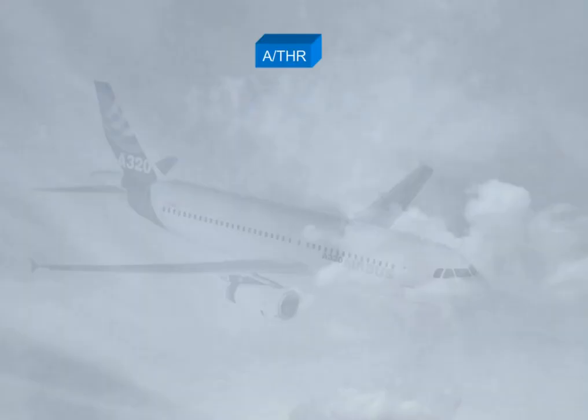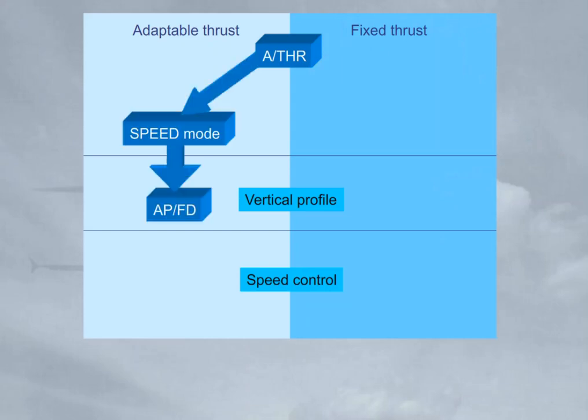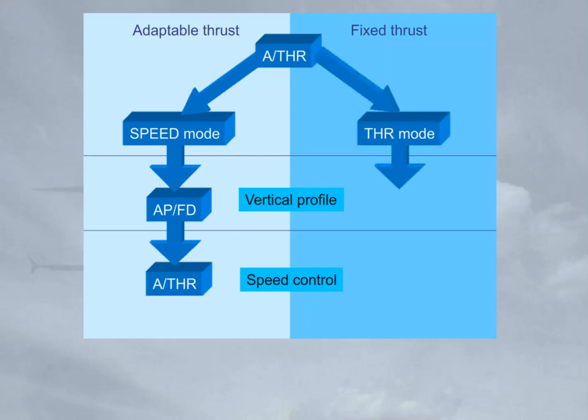The autothrust can work in two different modes. Speed mode: the autothrust continuously adjusts the thrust in order to maintain a target speed or Mach, e.g. during cruise or approach. Thrust mode: the autothrust sets a given thrust, e.g. max climb or idle.